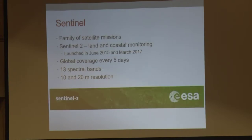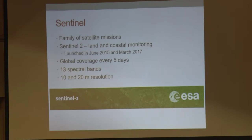One of the more recent things is what the European Space Agency is putting out — the Sentinel family of satellites. Sentinel-2 focuses on land and coastal monitoring. It's relatively new, only launched in 2015 and 2017. It gets global coverage every five days, keeping satellites getting a good sun image consistently. It has 13 spectral bands and 10 and 20-meter resolution. So we're beginning to get narrower in these widely available satellites at higher resolution.